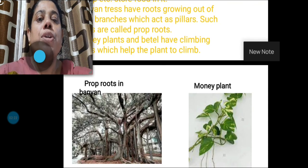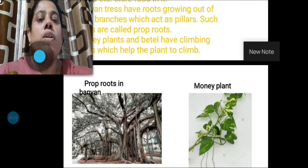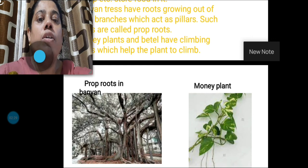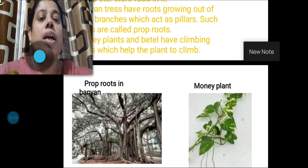Children, can you tell me what type of roots these plants have? Yes, banyan trees have prop roots and money plants have climbing roots.